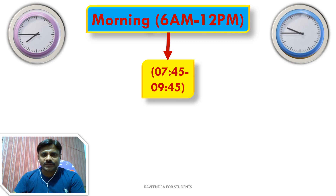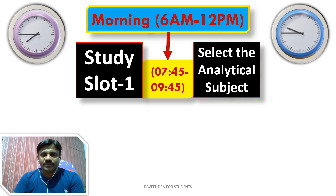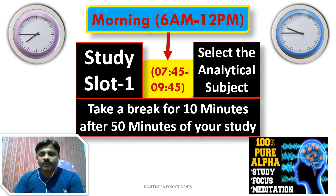The third time slot, 7:45 a.m. to 9:45 a.m., is very important — this is Study Slot 1. Select a subject involving the analytical part, with a lot of mathematical equations and assumptions. Don't forget to take a 10-minute break after every 50 minutes of study. Taking breaks develops alpha waves in the brain, which help store studied information permanently in memory. It is scientifically proved.